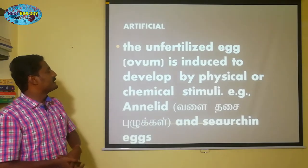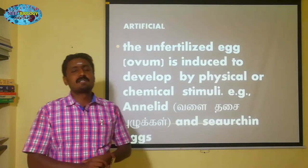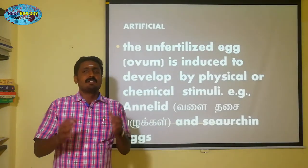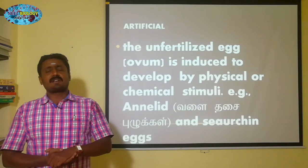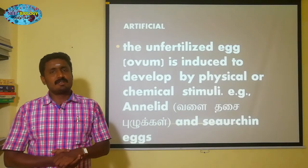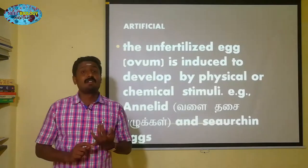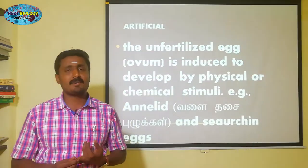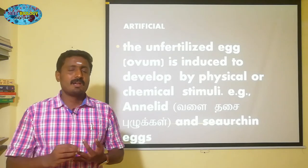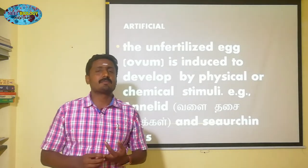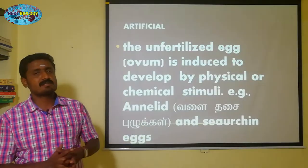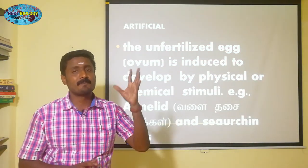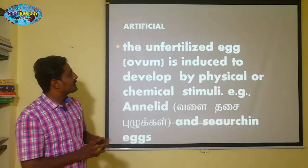The unfertilized egg is induced to develop by physical or chemical methodologies. We are looking at very different organisms — for example, honeybee. There are also organisms such as sea urchin and others. This is called Parthenogenesis, and what can we develop through this process?